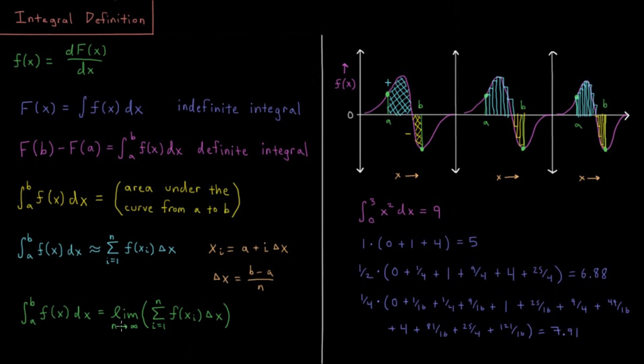Okay, so in the limit that we have an infinite number of rectangles, each of them is infinitely small, we have no error, and then the area of all those rectangles is equal to the area under the curve. So then in that limit, the area is equal to our integral. All right, so if we do something like the integral from zero to three of x squared integrated with respect to x, the exact value, as we'll see in the next video, is equal to nine.